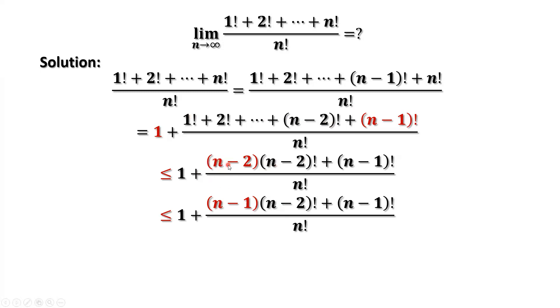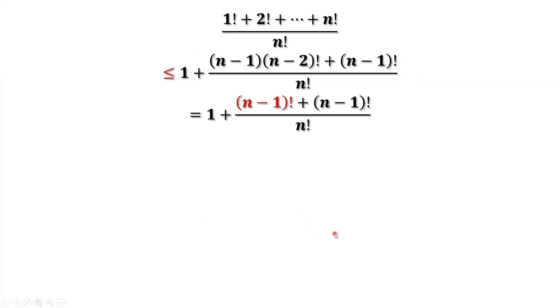If we replace n minus 2 by n minus 1, which is a bigger number, then this inequality is true: less than or equal to 1 plus n minus 1 times n minus 2 factorial, then plus n minus 1 factorial divided by n factorial. What is this? This is n minus 1 factorial. We have 2 times n minus 1 factorial in the numerator.